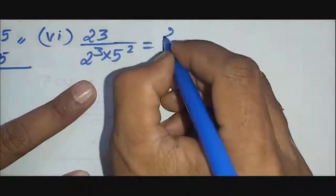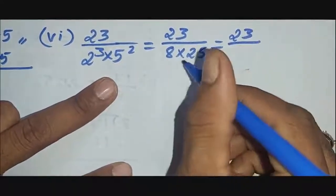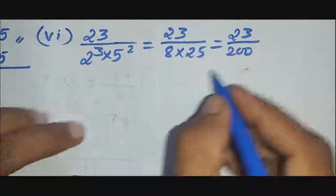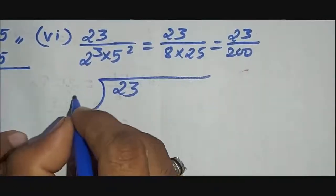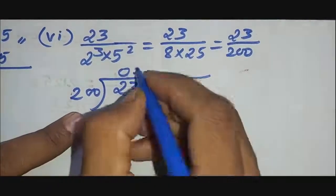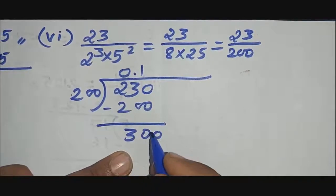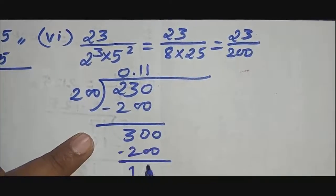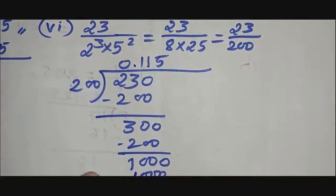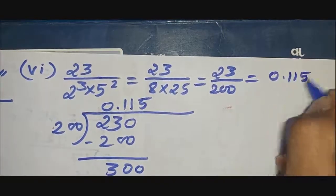Question 6: 23 divided by 2^3×5^2 = 23/200. Performing long division: 23/200. After working through the steps with remainder eventually becoming 0, the answer is 0.115.